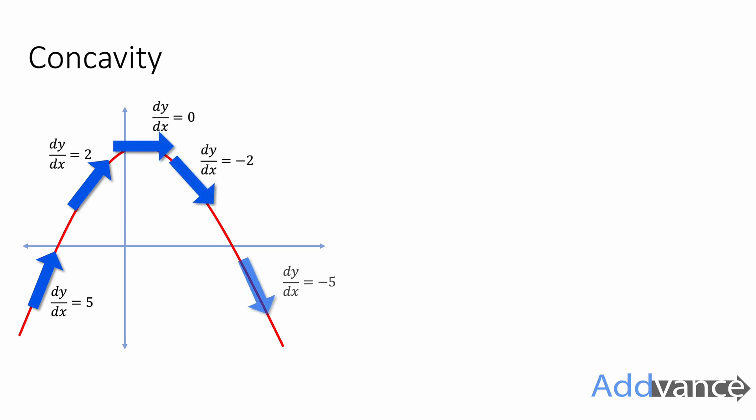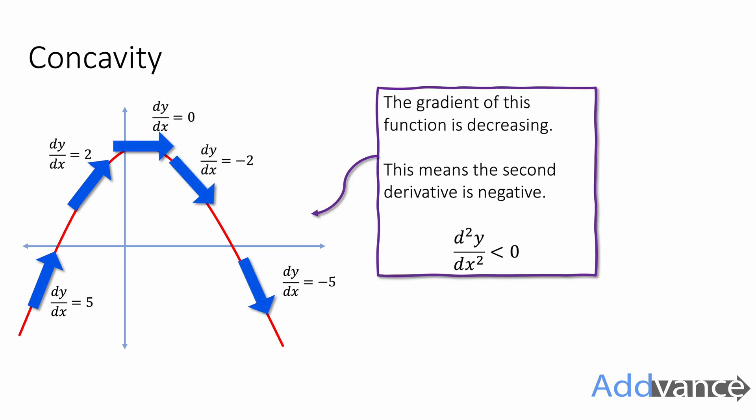Curves can have different shapes. They can look like this — notice the gradient is going from a gradient of 5, to 2, to 0, then minus 2, then minus 5. The gradient is gradually going down from a big positive number to zero to a small negative number. This means the gradient is decreasing, and therefore the gradient of the gradient is negative.